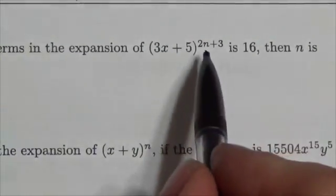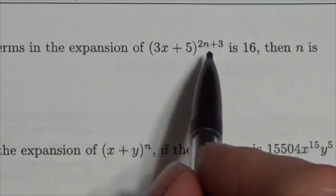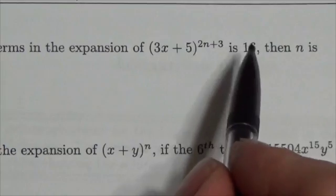Okay, let's take a quick look at this. My exponent here is 2n plus 3. I am telling you that the number of terms in this expansion is 16.